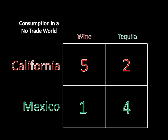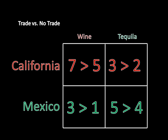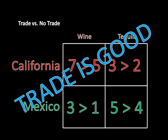You'll notice that these consumption values are better than what the states would be able to get on their own. Back in the world without trade, California only had five bottles of wine and two bottles of tequila. Now it has seven bottles of wine and three bottles of tequila — more of both. Mexico is also better off: it's getting three bottles of wine, whereas before it was only getting one, and it's keeping five bottles of tequila, whereas before it could only produce four. Both states end up better off — they're able to produce and consume more goods in this world of trade.